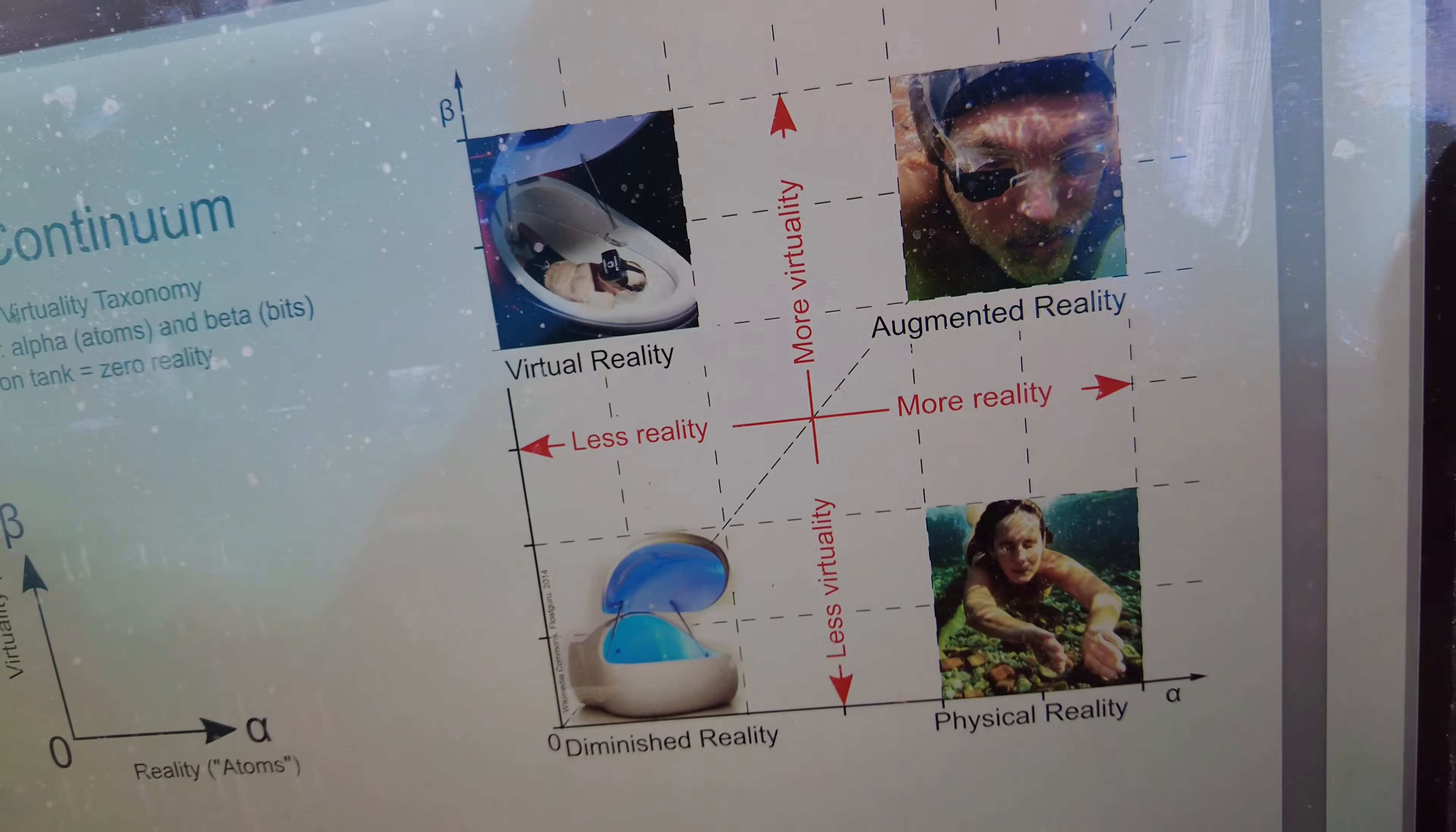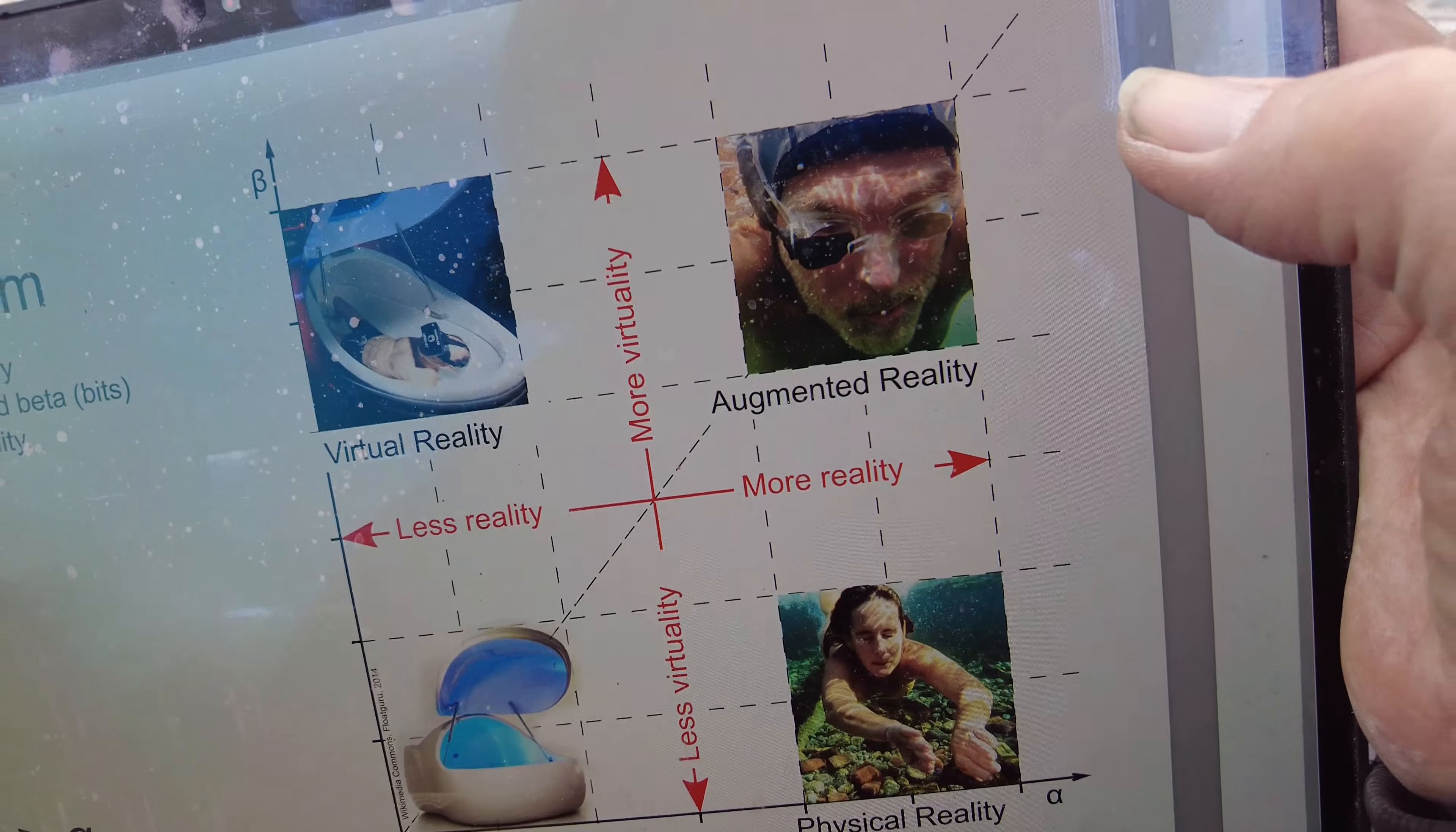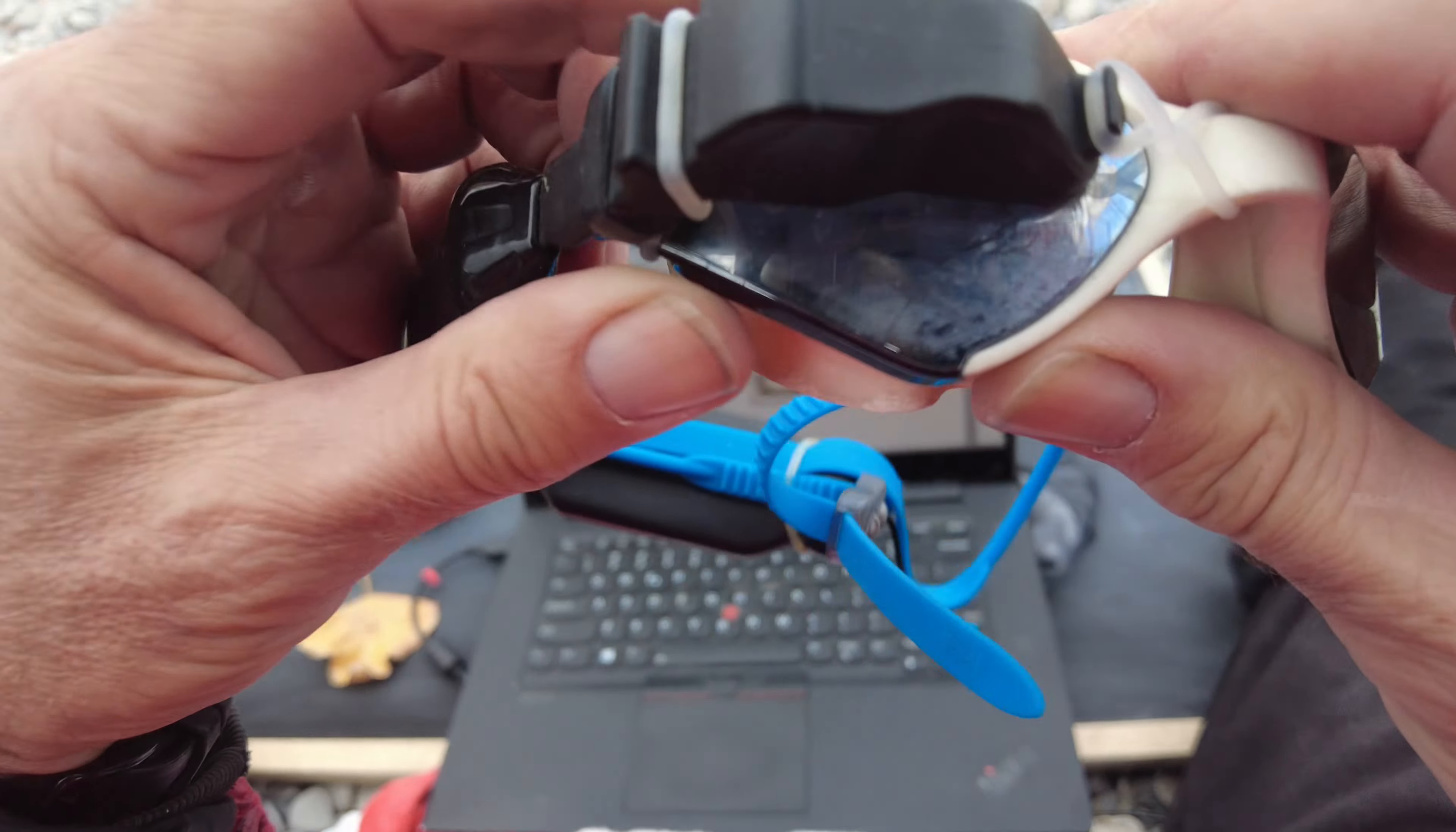Interestingly, we have augmented reality, which is where you have a mixture of atoms and bits. Some alpha and some beta. And up here in this position we've got the ice water swimming but with a headset, with an augmented reality overlay.